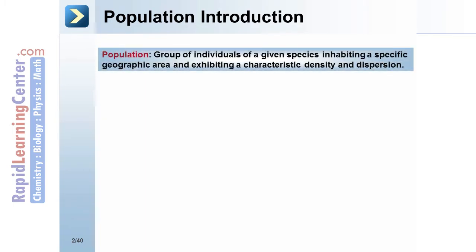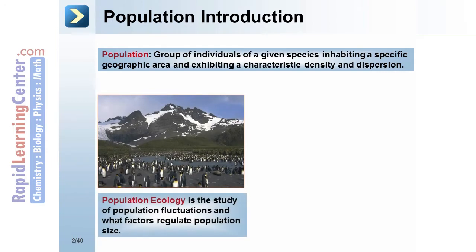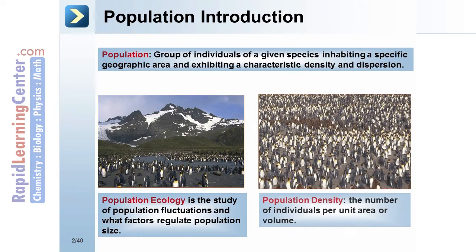Population is a group of individuals of a given species inhabiting a specific geographic area and exhibiting a characteristic density and dispersion. Population ecology is the study of population fluctuations and what factors regulate population size.